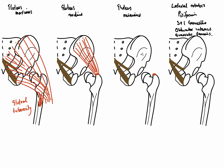Gluteus minimus does something very similar — it also attaches to the greater trochanter. It originates from between the posterior gluteal line and the inferior gluteal line, running toward the greater trochanter. So here we can see all three gluteal muscles: gluteus maximus, gluteus medius, and gluteus minimus.